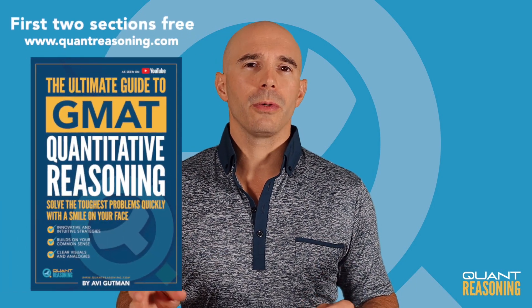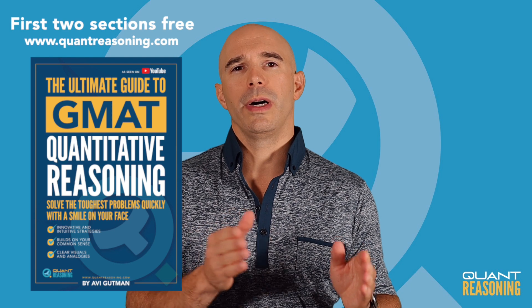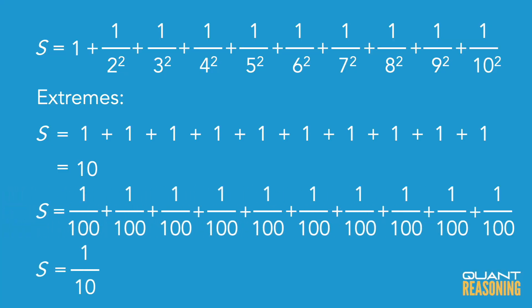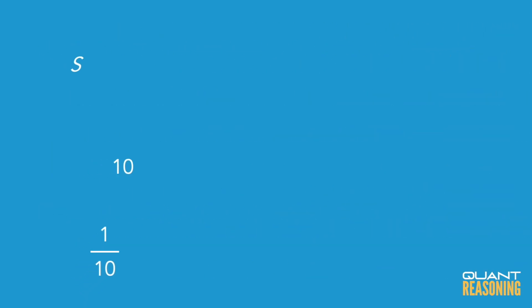The advice I give in my book for a question like this is to think about extremes. In one case, I would pretend that all of these terms are just ones — one plus one plus one, 10 of them — so that would be 10. That's one extreme, estimating all the fractions at their top value. On the other extreme, I would imagine they're all equal to the smallest, which is one over 100. If you had 10 terms all equal to one over 100, you get one tenth. So the answer would be somewhere between one tenth and 10.